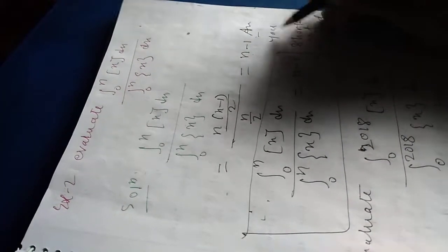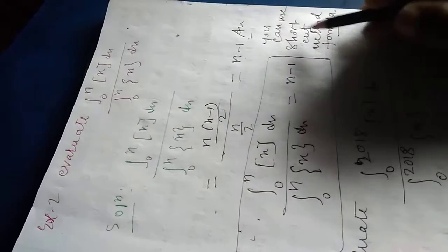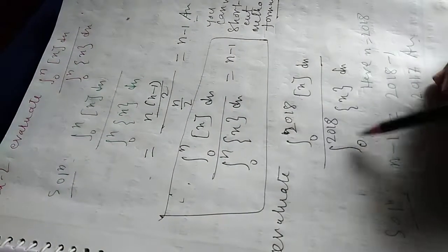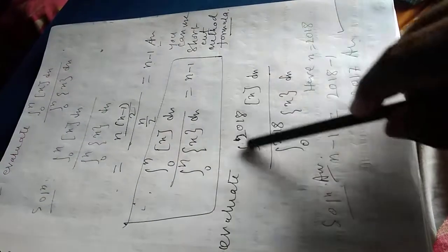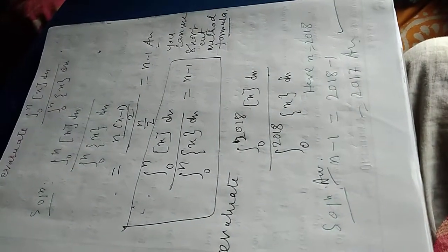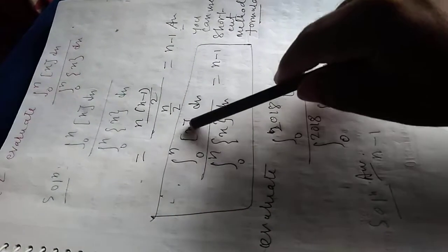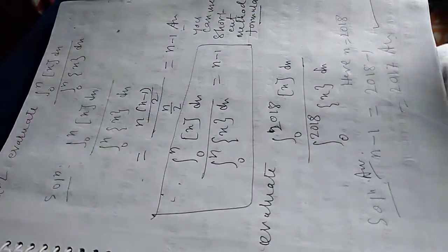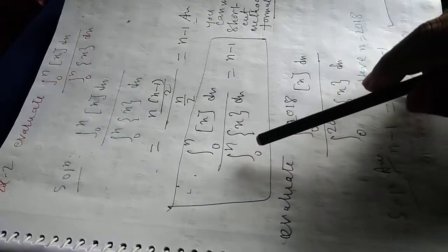You can use this as a shortcut method formula. If the question asks for the integral from 0 to 2018 of integral part of X divided by the integral from 0 to 2018 of fractional part of X, the answer is N minus 1, which equals 2018 minus 1, that is 2017. Within a second you can write the answer. So this is the relation between integral part of X and fractional part of X for integration from 0 to N.